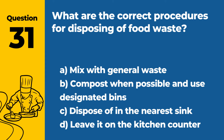Question 31. What are the correct procedures for disposing of food waste? a. Mix with general waste. b. Compost when possible and use designated bins. c. Dispose of in the nearest sink. d. Leave it on the kitchen counter. Answer b. Compost when possible and use designated bins. The correct procedure for disposing of food waste includes composting when possible and using designated bins to prevent attracting pests and maintain hygiene.